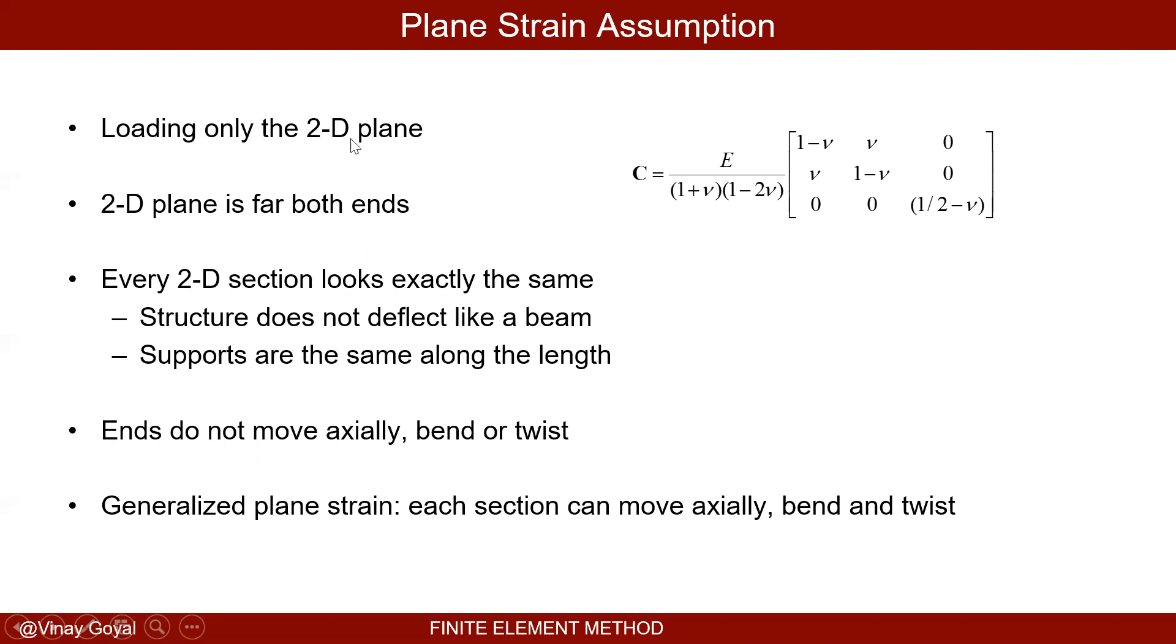In plane strain assumption the loading is only in the 2D plane. The 2D planes are far, both ends. Every 2D section looks exactly the same. So take a very long pipe. If we're modeling the cross section of that pipe and applying loads to that pipe cross section that's what we're talking about being plane strain. That 2D plane is so long in one direction that every cross section behaves the same. The structure does not behave like a beam. The supports are the same along the length. The ends do not move axially, bend, or twist.